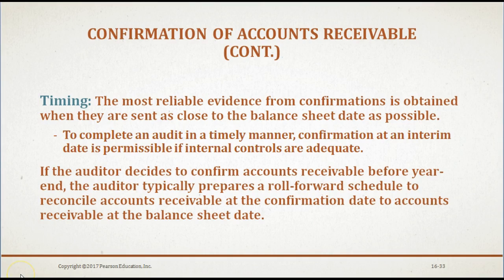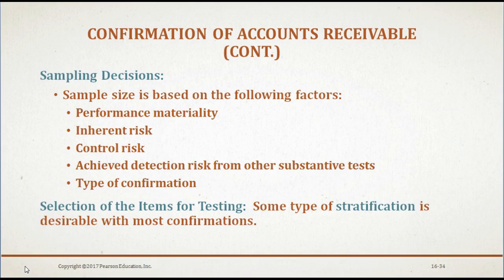The most reliable evidence from confirmations is obtained when they are sent as close to the balance sheet date as possible. Confirmation at an interim date is permissible if internal controls are adequate, and the auditor typically prepares a roll-forward schedule to reconcile accounts receivable at the confirmation date to the balance sheet date. Sampling for confirming accounts receivable is based on performance materiality, inherent risks, control risks, achieved detection risks from other substantive tests, and the type of confirmation to be used. Some type of stratification is desirable with most confirmations of accounts receivable.